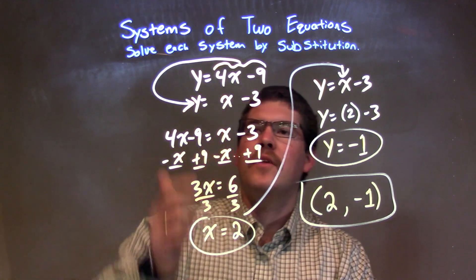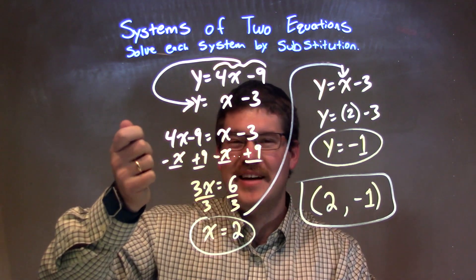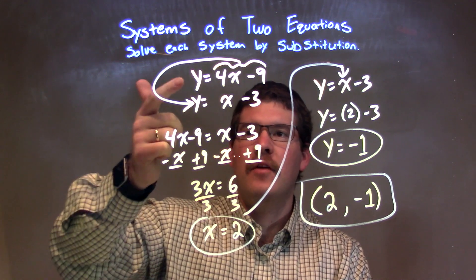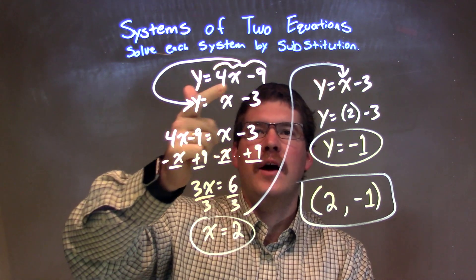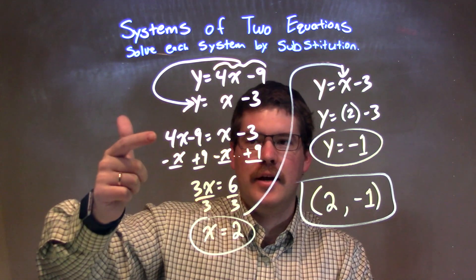So, let's recap. We're given our two equations. We need to solve it by substitution. I had a variable by itself, this y was by itself. So, 4x minus 9 was equal to y, plug it in for that y right here.